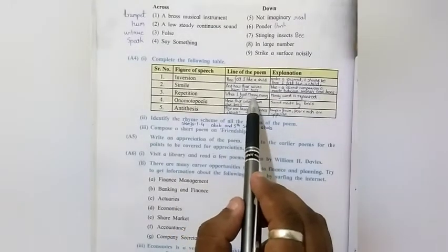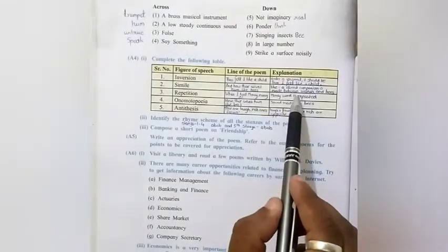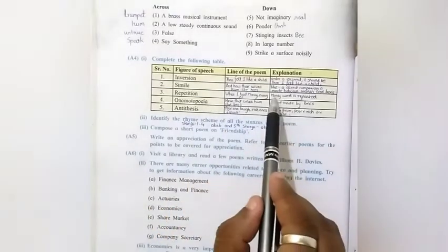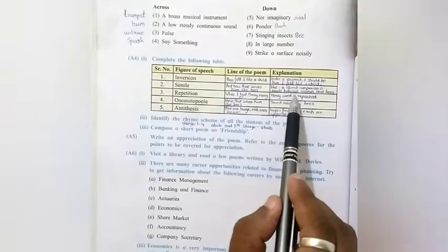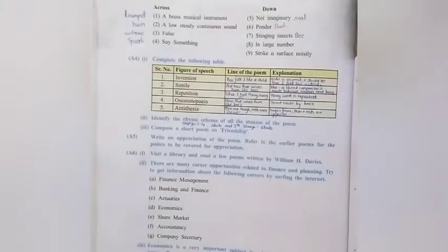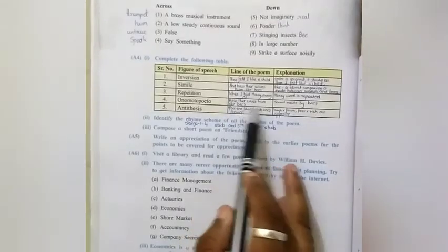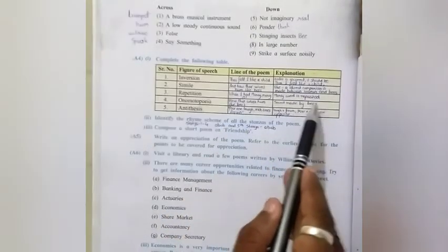Repetition. When I had money, money, o. So you know that. The money word is repeated. Okay. Then we have onomatopoeia. Not the money word. The consonant of money is repeated more than twice. Onomatopoeia. How their wives hummed like bees. Here the sound of the bees. That is humming of the bees is mentioned.